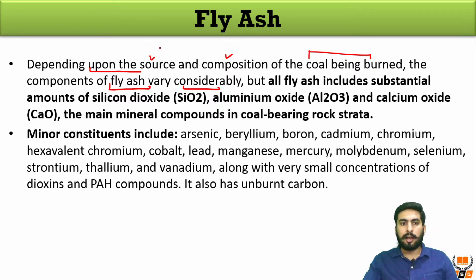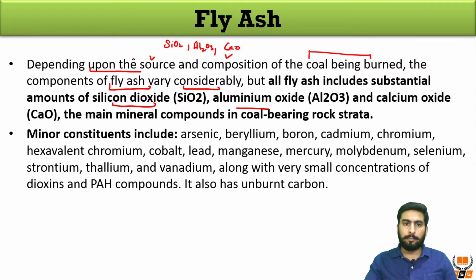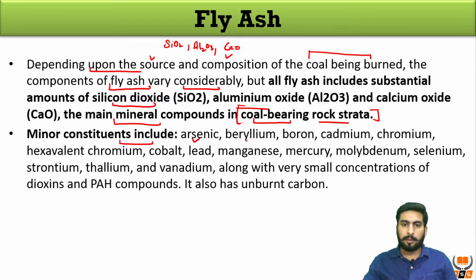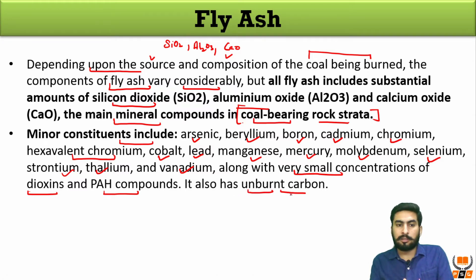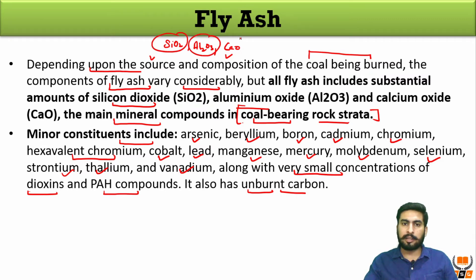There are some substantial component amounts: silicon dioxide, aluminum oxide, and calcium oxide. These are the major components and the main mineral compounds come from coal-bearing rock strata. Minor constituents include arsenic, beryllium, boron, cadmium, chromium, hexavalent chromium, cobalt, lead, manganese, mercury, molybdenum, selenium, sodium, thallium, vanadium, along with very small concentrations of dioxins and PAH compounds, and also unburnt carbon.